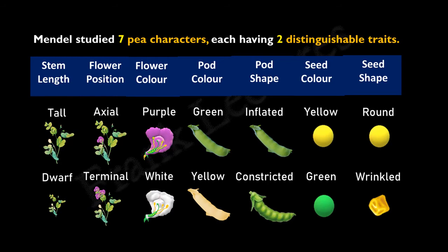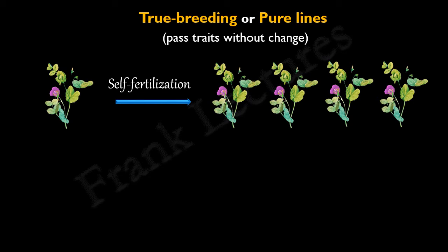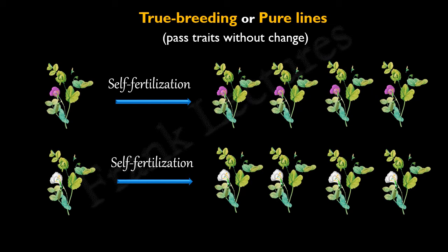Recall that Mendel's experiments involved seven pea characters, each having two visually distinguishable traits. We also understood the term pure line or true breeding. Plant varieties that pass traits without change from one generation to the next are known as true breeding or pure lines. For example, on self-fertilization, plants with purple flowers produced offspring with purple flowers, and plants with white flowers always produced offspring with white flowers.